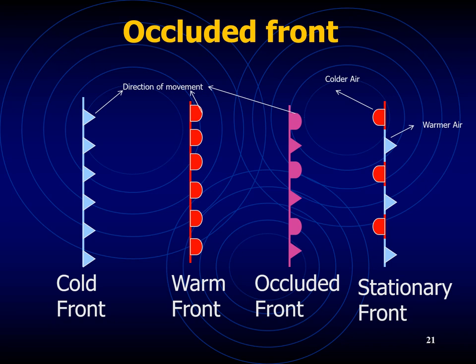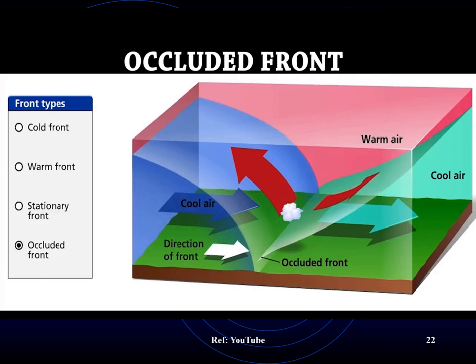Finally, the occluded front: as the depression moves along its path, the upsliding of warm air at the warm front and undercutting by cold air at the cold front ultimately results in the warm air being lifted to greater heights. This raising of warm air from the ground is known as an occlusion and the depression is said to be occluded. The occluded front results from the cold air slowly catching up and overtaking the warm front. On a surface weather map, it is represented as a purple line with alternating cold front triangles and warm front half circles, both pointing in the direction of movement.